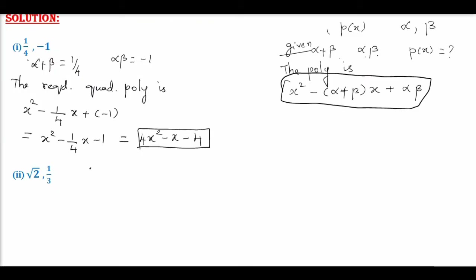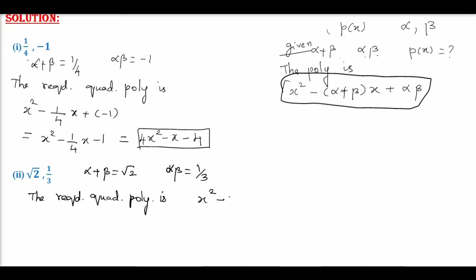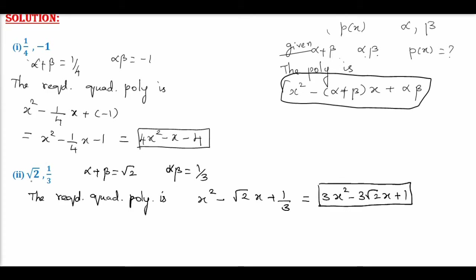Now the second subdivision: the sum given is √2 and the product given is 1/3. Therefore, the required quadratic polynomial is X square − √2 · X + 1/3. This can also be written by multiplying throughout by 3 as 3X square − 3√2 X + 1. So this is the required polynomial for the given set of numbers √2 and 1/3.